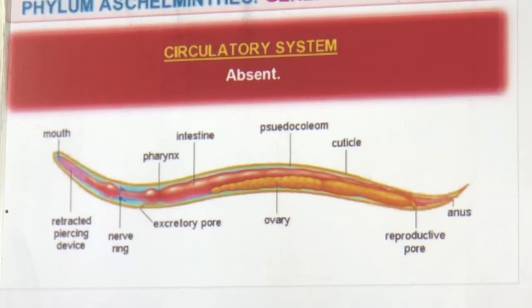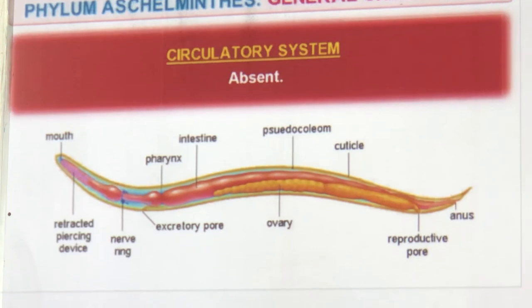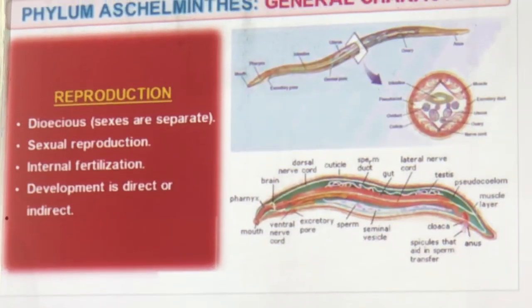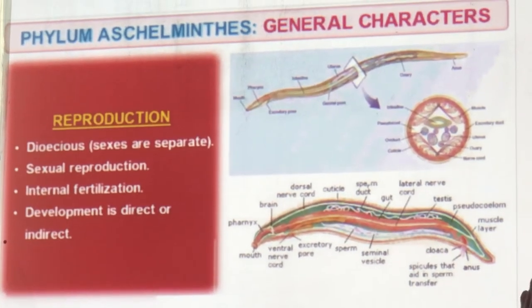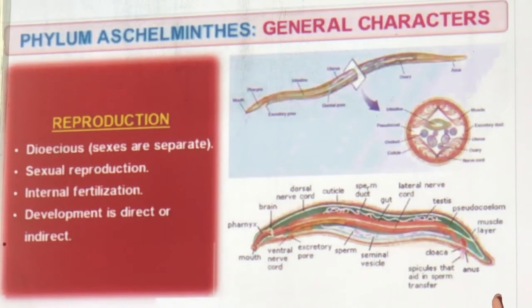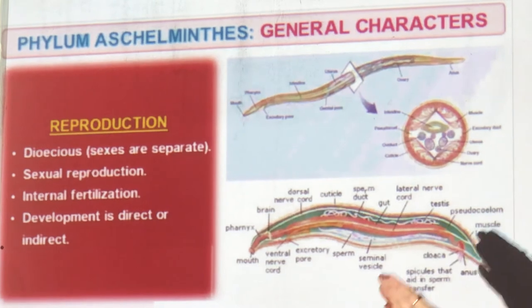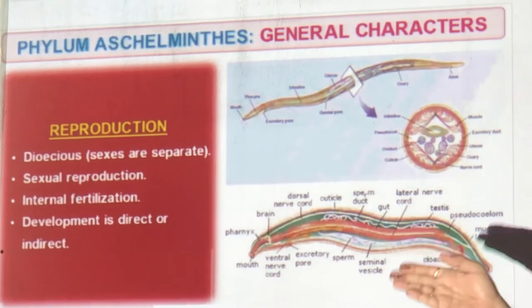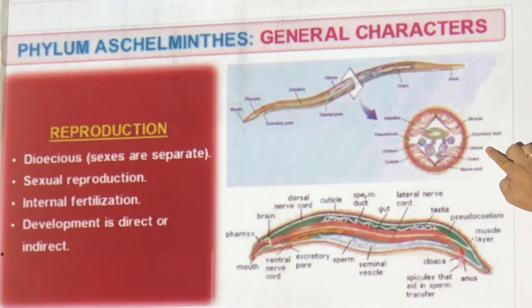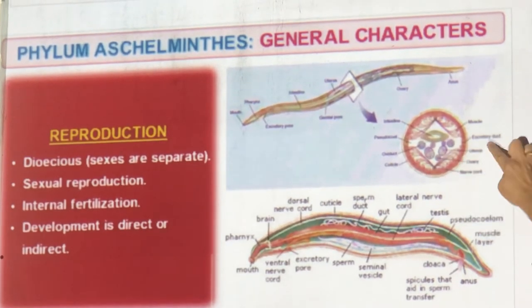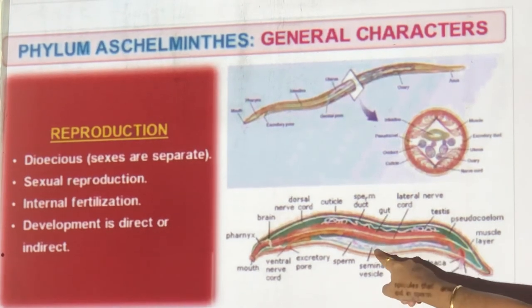The respiratory system is absent and the circulatory system is absent because they live inside a host body with ready-made nutrients. Reproduction: dioecious — male and female are separate. Sexual reproduction with internal fertilization. Development is direct or may show larvae. Ovaries, uterus, and sperm are all present and well developed.